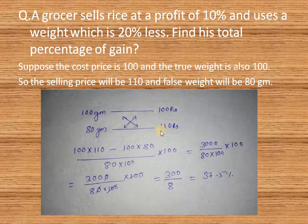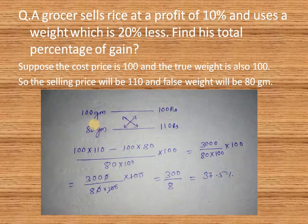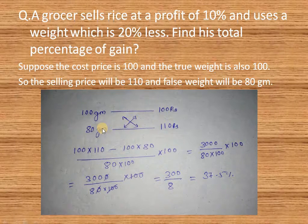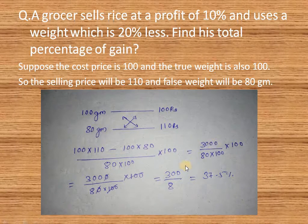After cross multiplying, we get: 100 into 110 minus 100 into 80, divided by 80 into 100, into 100. Here, 80 into 100 is the real cost price of 80 grams. After calculating this, we get 300 divided by 8, which equals 37.5 percent.